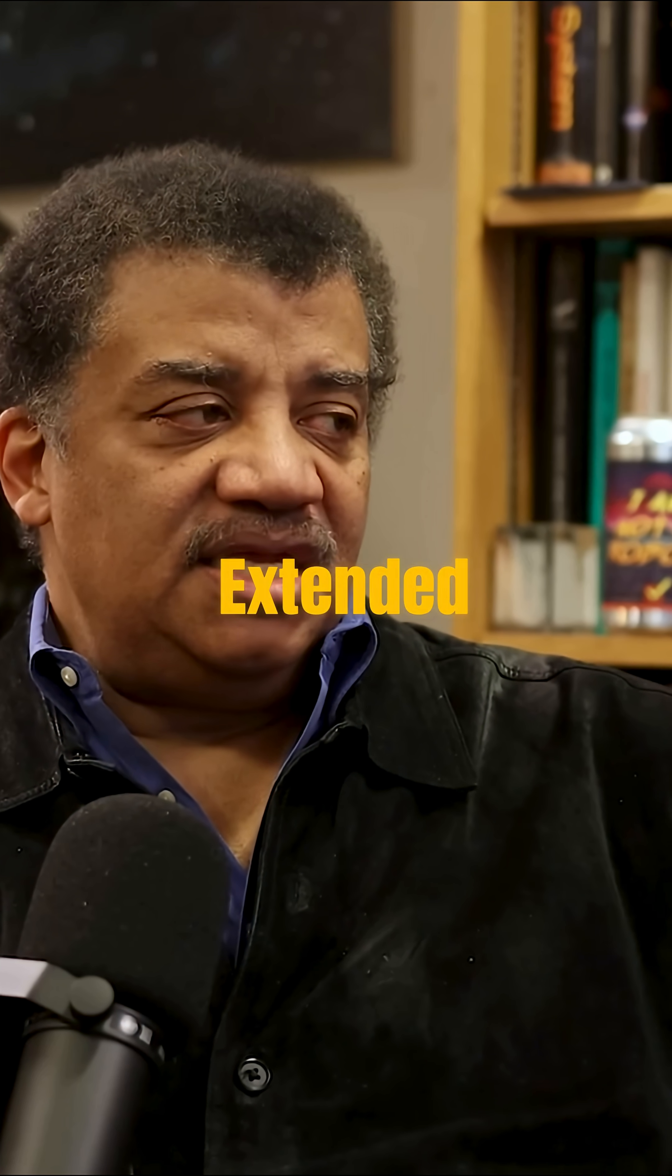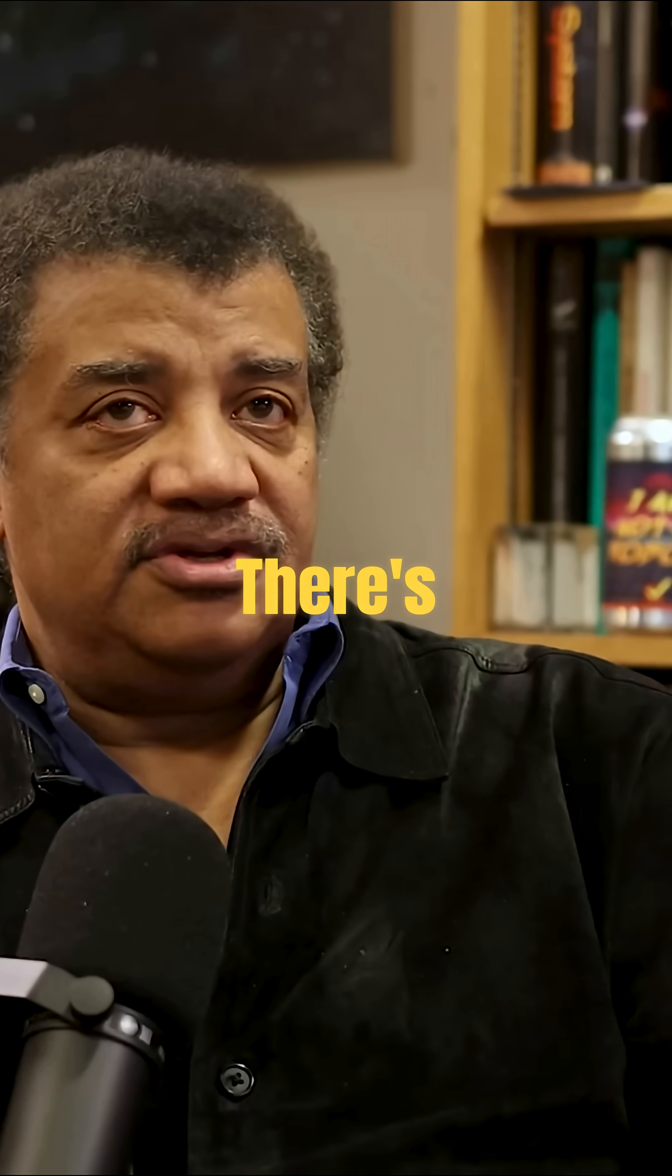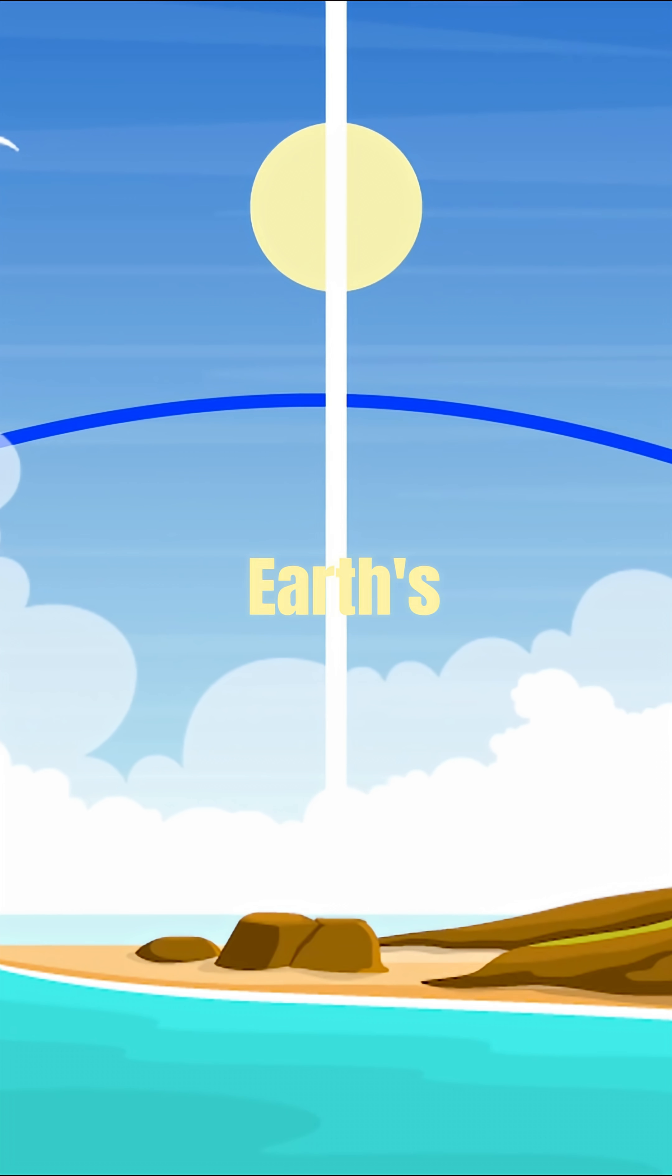Earth's equator, if you extended it out to the sky, there's a line on the sky that corresponds to Earth's equator. That's called the celestial equator.